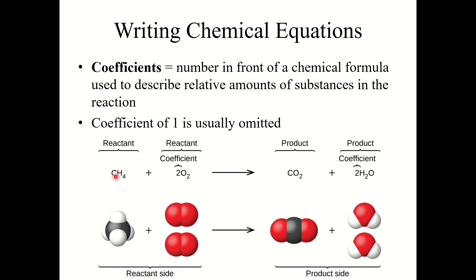In this example, this is the combustion reaction of methane with oxygen gas to form carbon dioxide and water. We have unwritten coefficients of 1 here, meaning just 1 molecule of methane and 1 molecule of carbon dioxide. Here we've got 2 molecules of oxygen gas and 2 molecules of water.